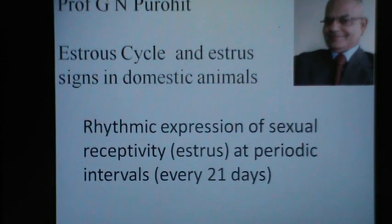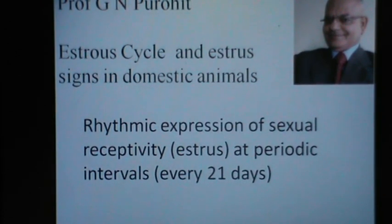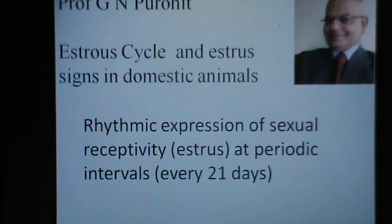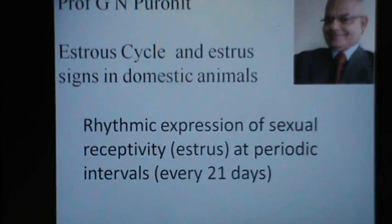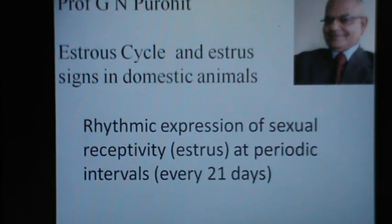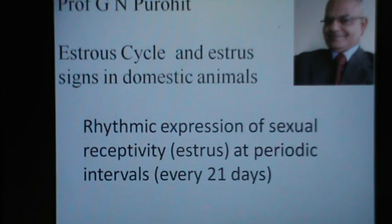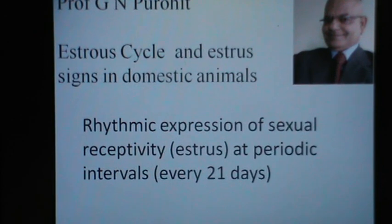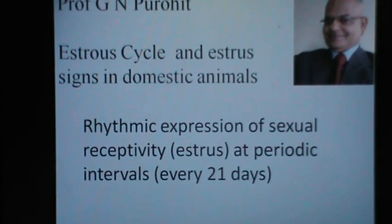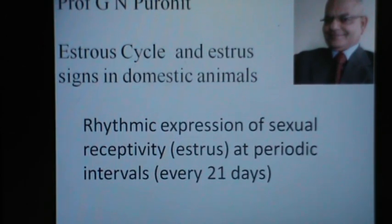Estrus cycle can be defined as the rhythmic expression of sexual receptivity or the estrus at periodic intervals in domestic farm animals. Now as the animal attains puberty, the female starts evidencing the sexual receptivity towards the acceptance of the male, and this is known as the estrus. In cattle, the heifer would start evidencing estrus every 21 days and this would continue till the animal becomes pregnant.